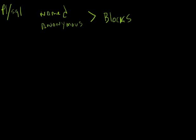A named block is one that's going to be stored inside the database, so it's something you're going to use over and over again. An anonymous block is something you're probably just going to run one time — it doesn't actually get stored in the database. It gets run as PL/SQL inside the Oracle database, but if you want to run it a second time you have to call it from a text file saved locally. Whereas a named block is stored inside the database and can be used over and over again.